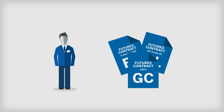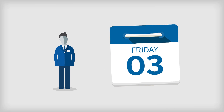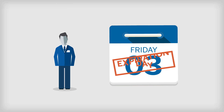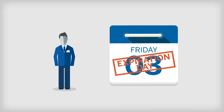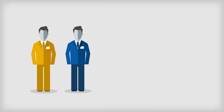A contract's expiration date is the last day that a trader can trade that contract. This can occur on the third Friday of the expiration month, but varies by contract. Prior to expiration, a futures trader has three options.